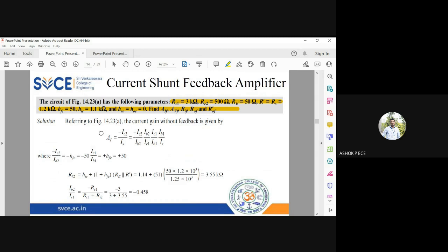First, current gain ai equals minus ic2 by is. We're using the simplification ic2 by ib2, ib2 by ic1, ic1 by ib1, ib1 by is. This one is hfb, and this one is hfb. We need to find ib2 by ic1 equals minus rc1 by rc1 plus r2.